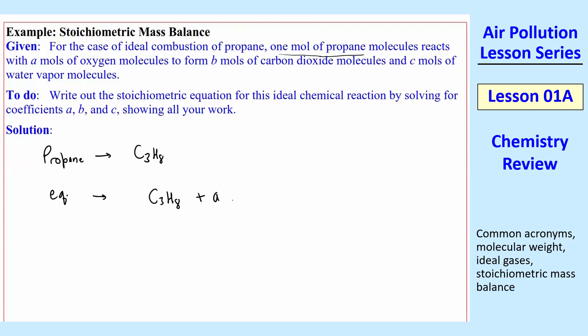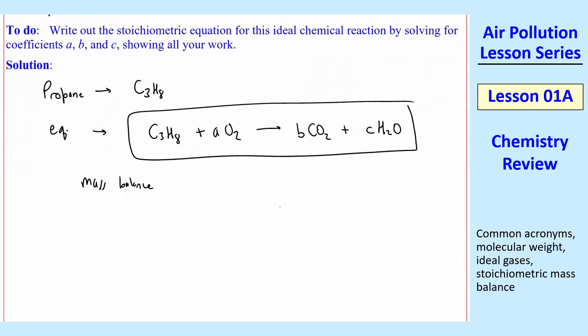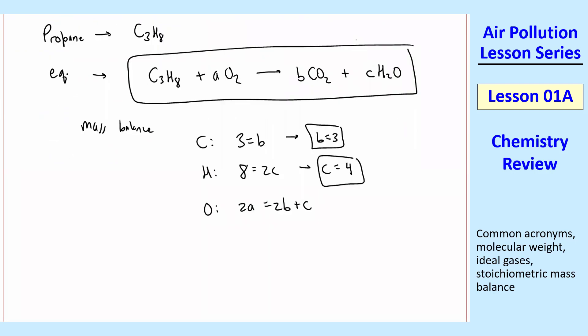Plus A moles of oxygen. So A O2 yields B moles of CO2 plus C moles of water vapor, C H2O. And now we do the mass balance. So this is our chemical equation. We just need to find A, B, and C.